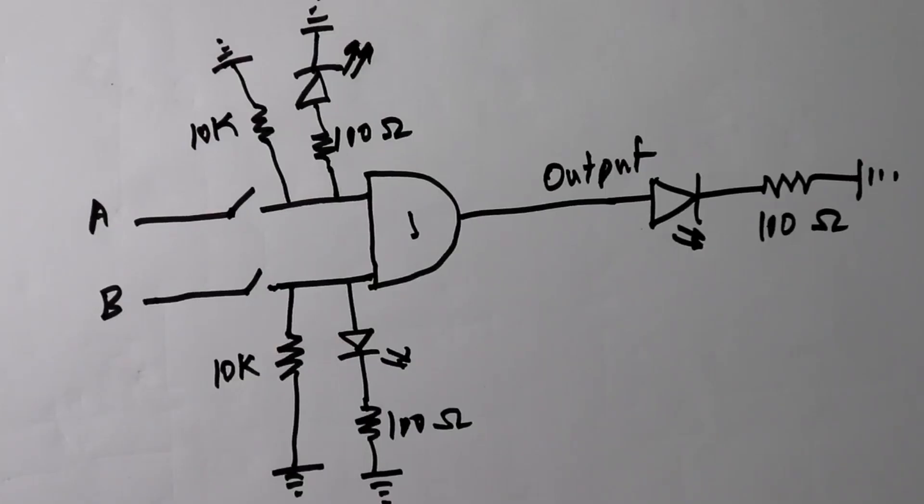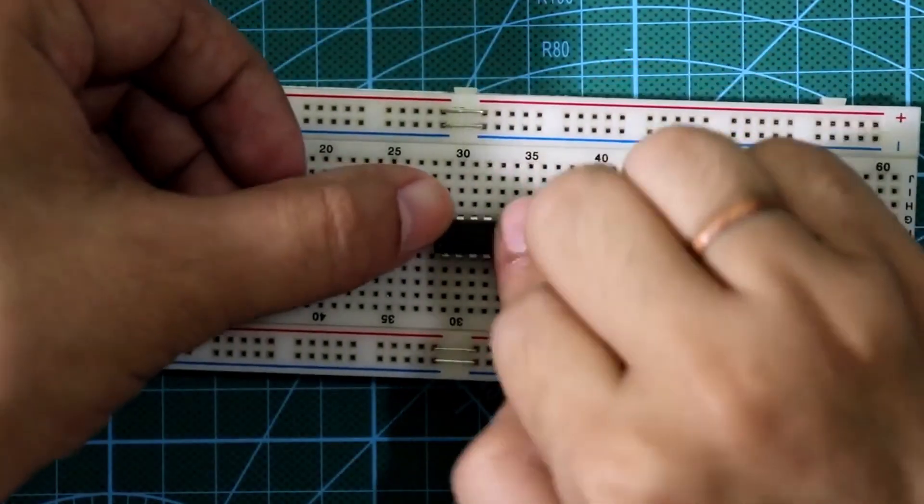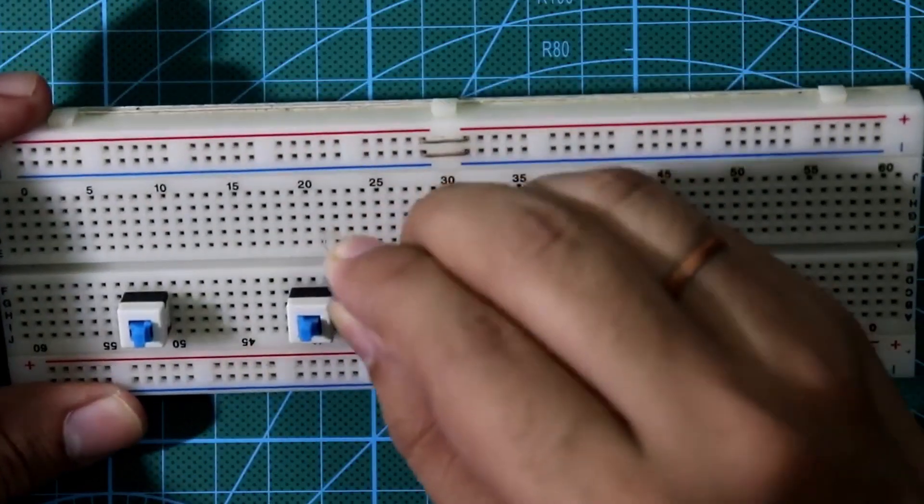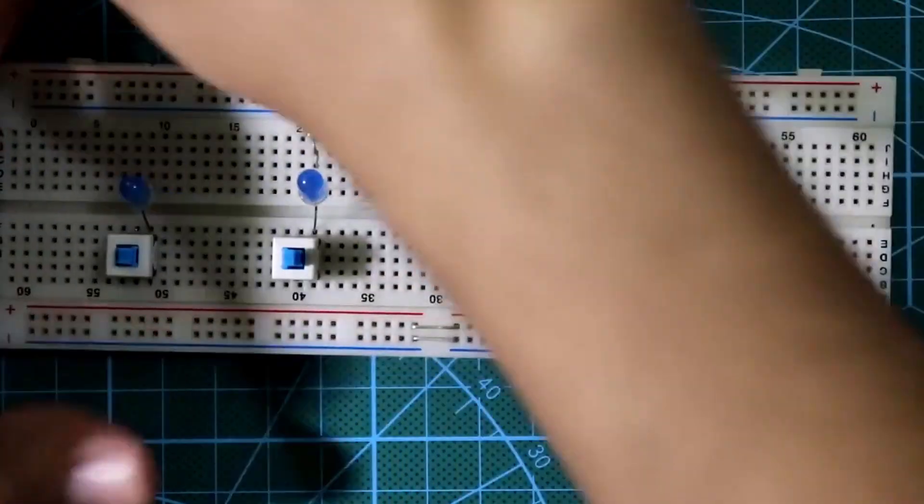So now we have to connect all this to the breadboard. Put the IC here. Two switches, input LEDs. Then it is connected to 100 ohms resistor. And then it will go to ground.